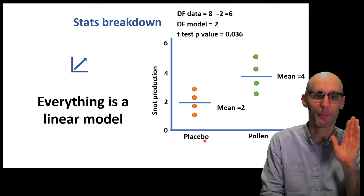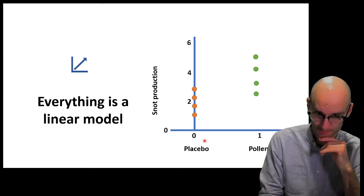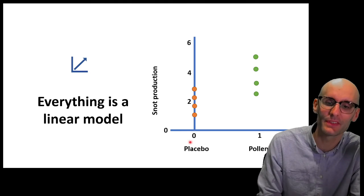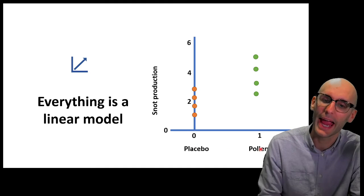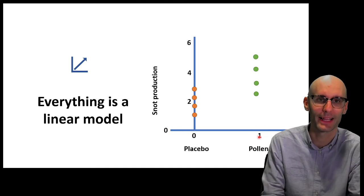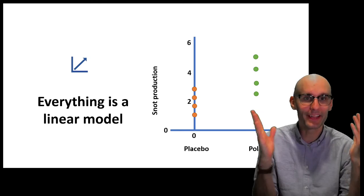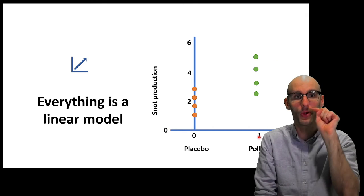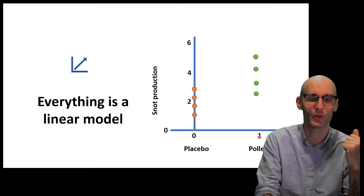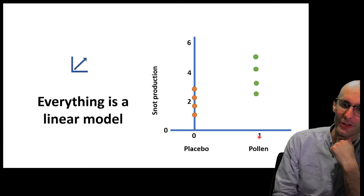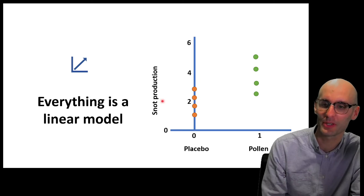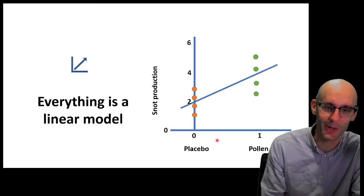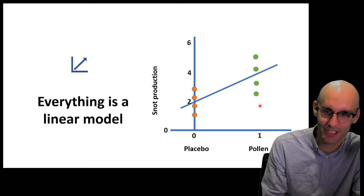I'm telling you, you don't need to worry about that because everything is a linear model. How do you turn this into a linear model? Well, let's imagine that the placebo group, we give the value of 0, and the pollen group, we give the value of 1. Now, that's literally in your data set. If you wanted to, you could go 0, 0, 0, 1, 1, 1, and then you could have in the next column your dependent variable. 0s and 1. And we've still got snot production. This is the exact same data. Now, let's run a linear regression through it. There we go. We've run a nice little linear regression through that.